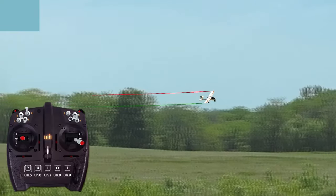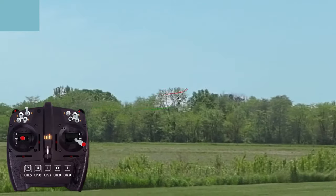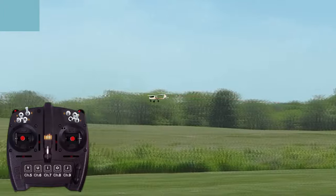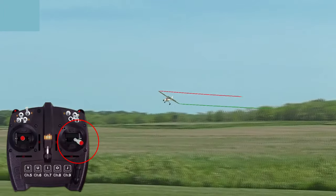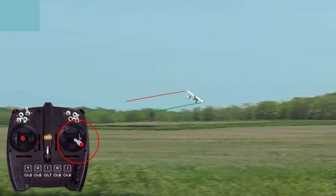When the throttle is set for level flight, the stabilization technology will attempt to keep the turn level. That said, it may still be necessary to pull or hold in some up elevator to maintain a perfectly level turn throughout.